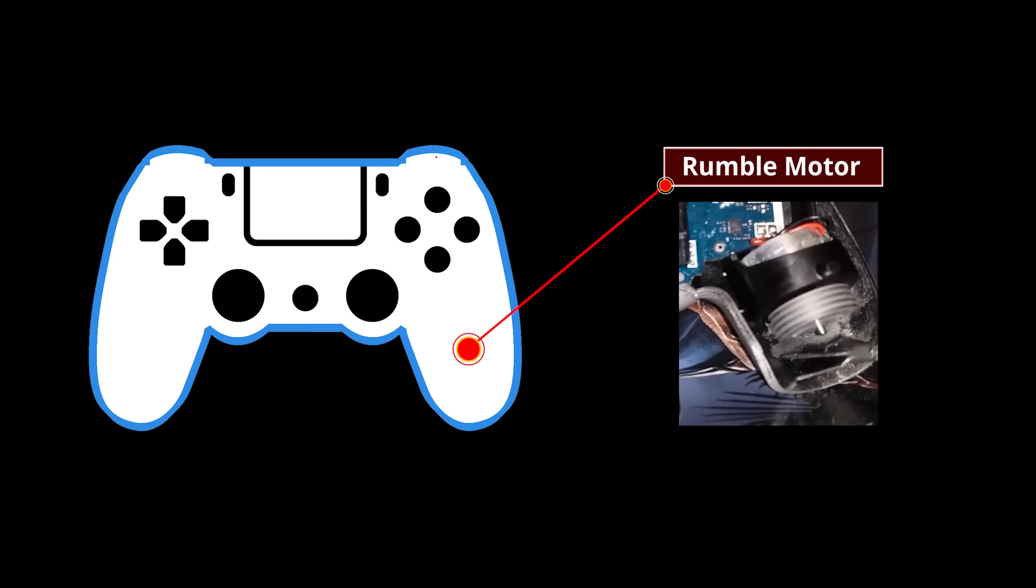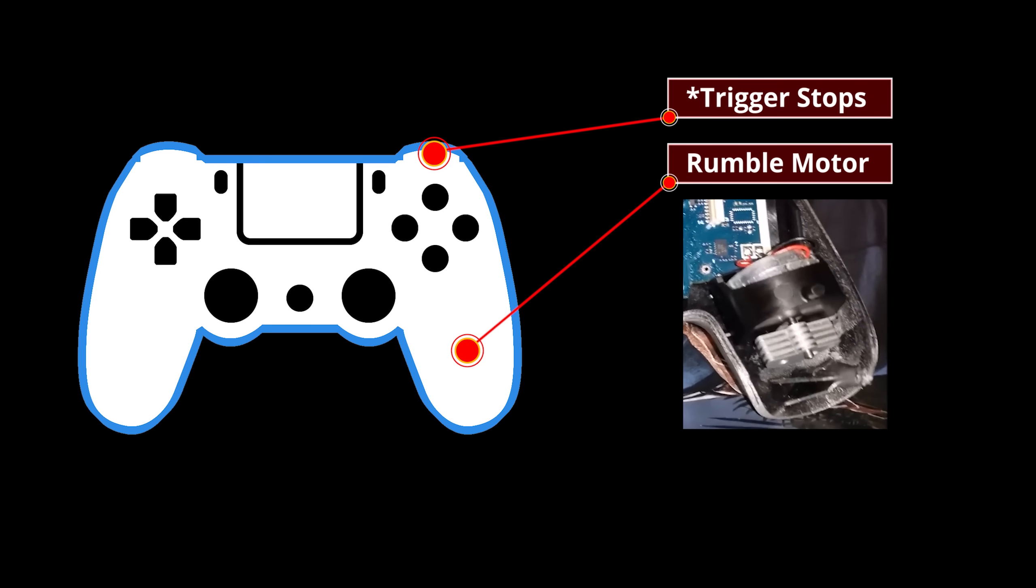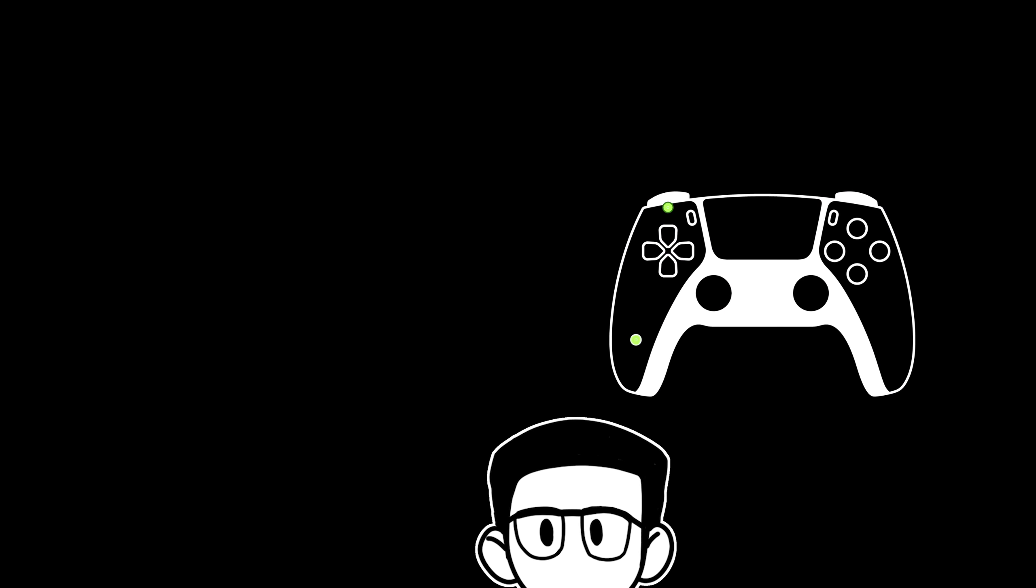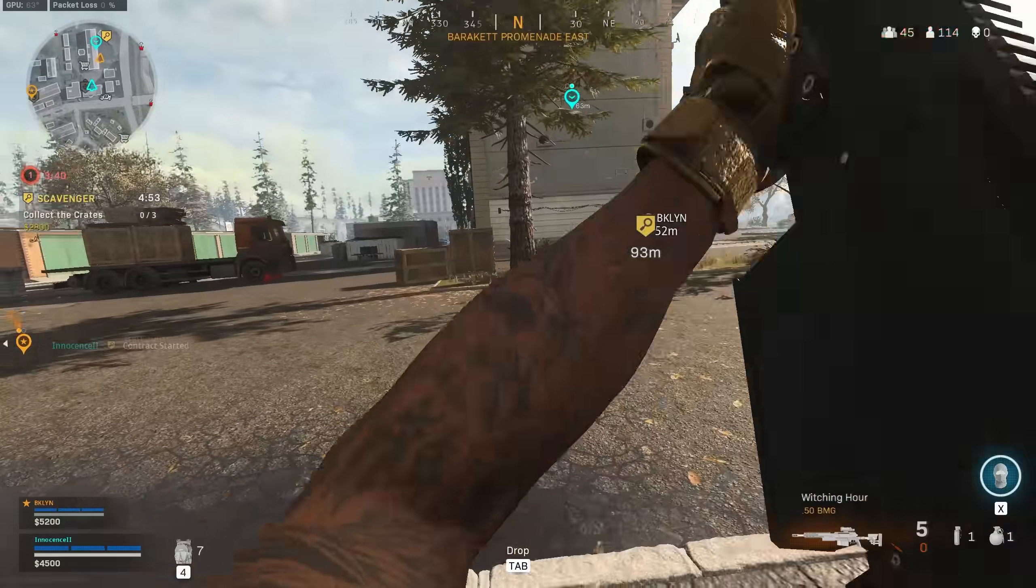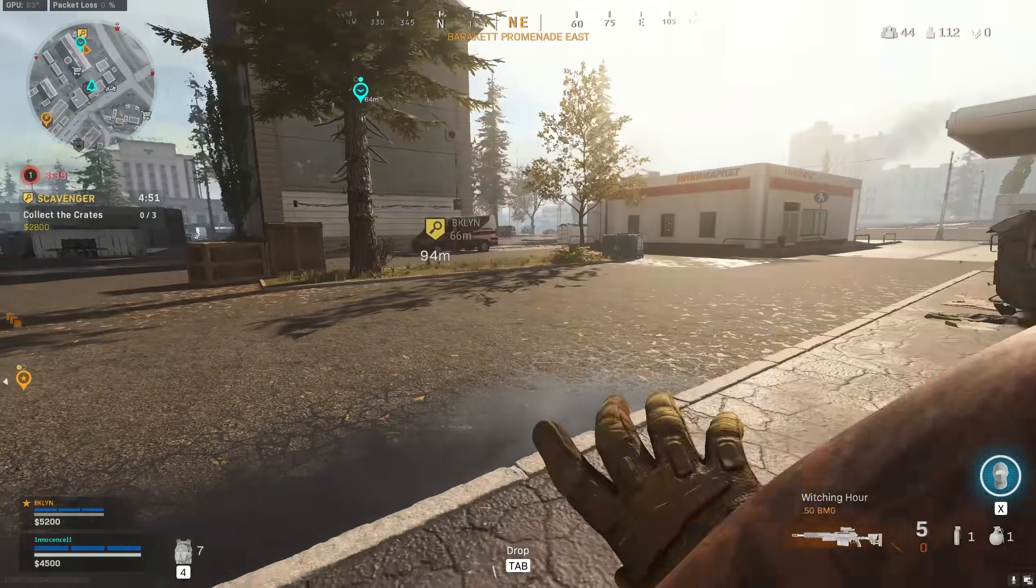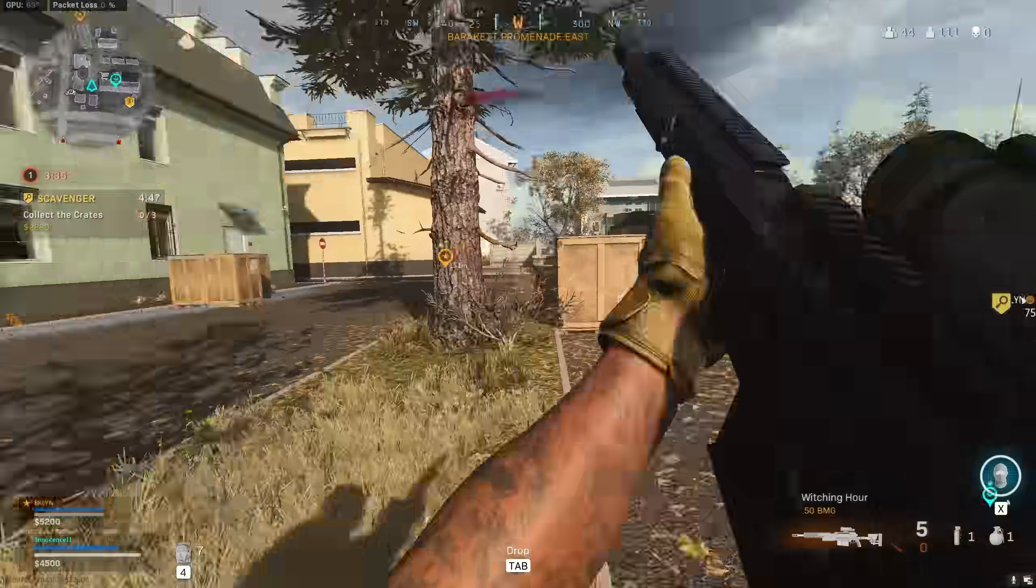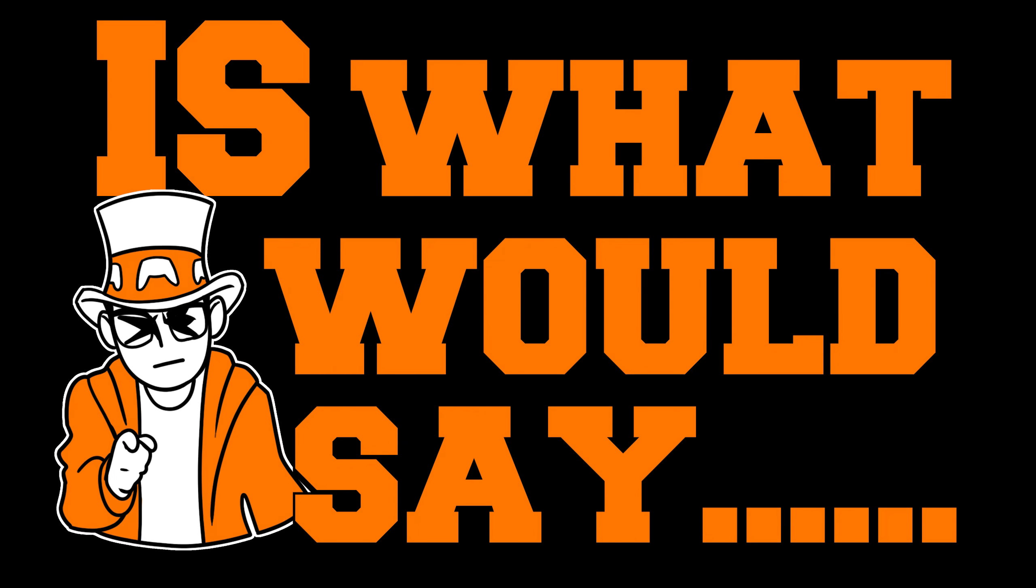I mean, technically every single PS4 controller also had haptic feedback because of its vibration motors, and a lot of third-party controllers came with adaptive triggers. Technically phones have been coming with haptic feedback technology for as long as they could vibrate, so a pretty long time. So saying that the PS5 controller comes with either technology shouldn't be too exciting, and at face value it definitely isn't.